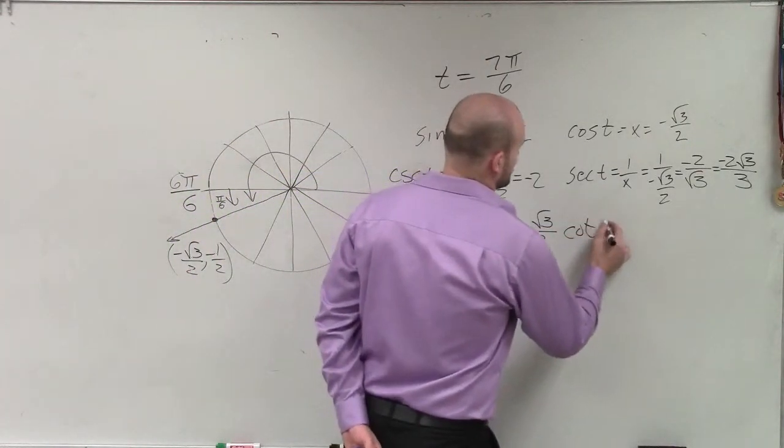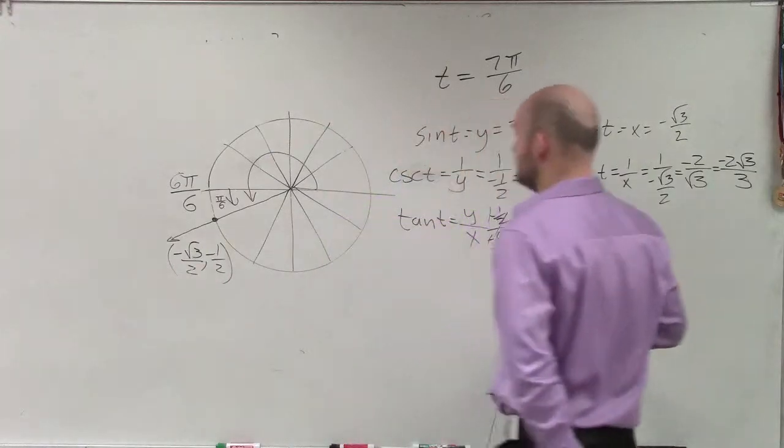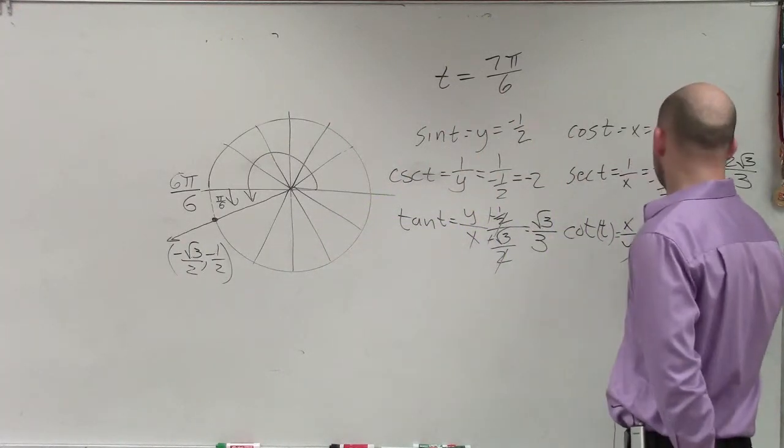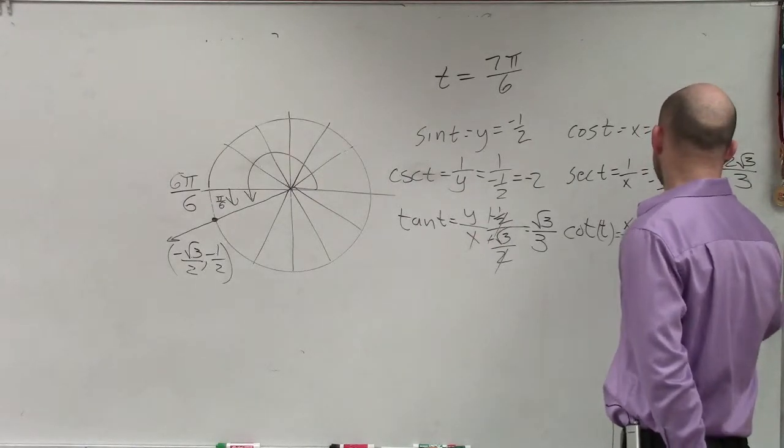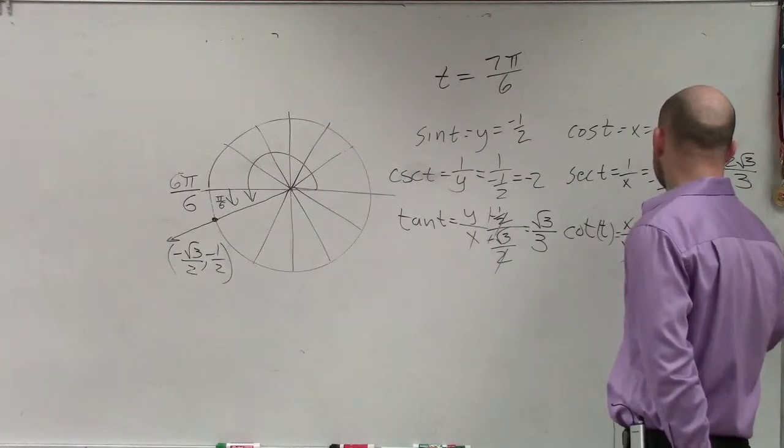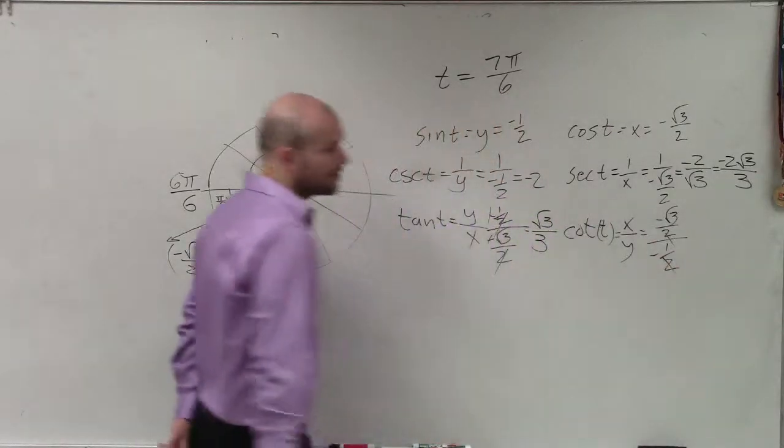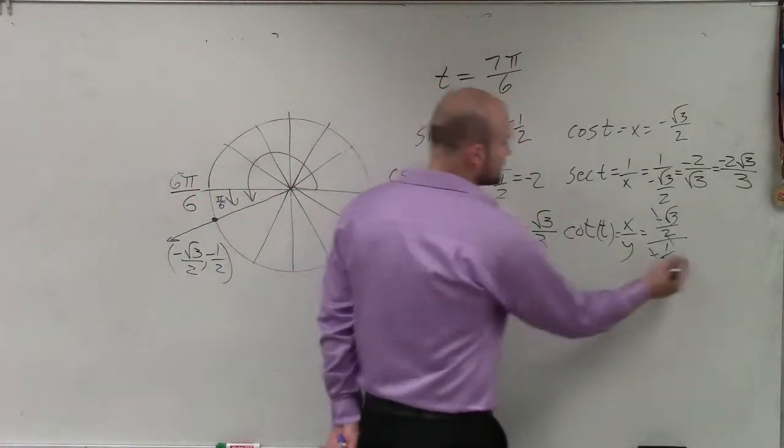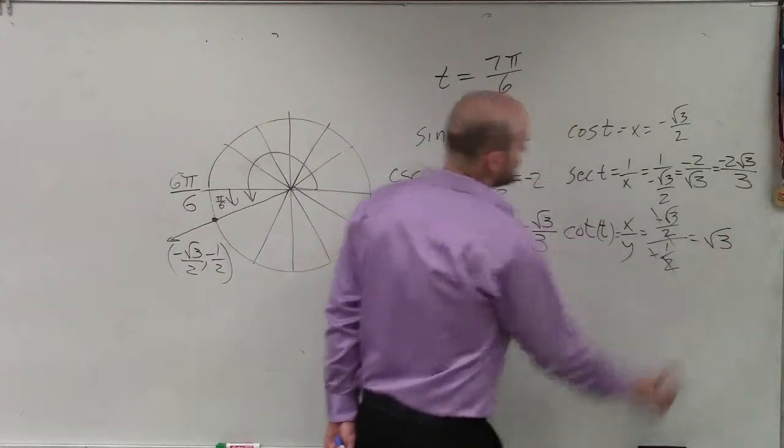And then the cotangent of t, that's just going to be now equal to the x coordinate over the y coordinate. So therefore, I take negative square root of 3 over 2 divided by negative 1 half. Again, the 2's are going to divide to 1, and my negatives will divide to a positive, and I'm just left with the square root of 3.